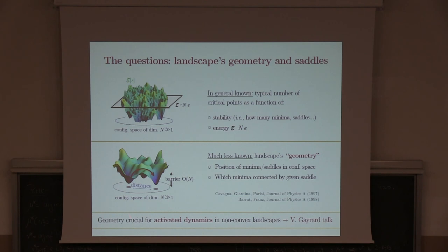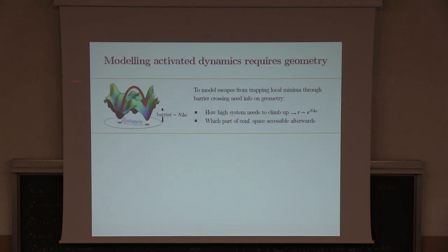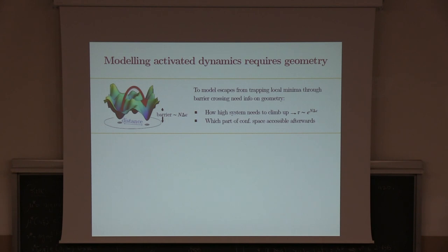These are the properties I call geometrical properties, because you have this idea of distances and positions in configuration space. They are crucial to understand quantitatively the dynamics in non-convex landscapes, in particular in the regime of activated dynamics, relevant when the dimension N is very large but not strictly infinite. In this case, activated processes can occur in which the system, trapped in a local minimum for a very large time, eventually escapes through the crossing of energy barriers. To model these processes, you need to know how high you need to climb up — what is the barrier — and once you are up there, what portion of configuration space is accessible to you afterwards, i.e., what is the connectivity of your first minimum.